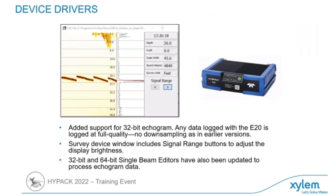One of the biggest things here is that we now support the 32-bit echograms that the E20 are outputting. This is fully supported now and you can process this without any problems whatsoever — an exciting new feature.